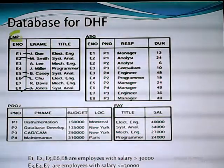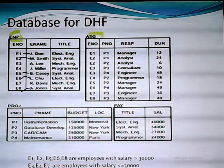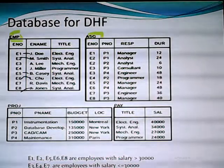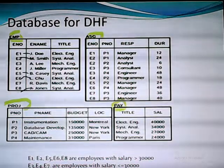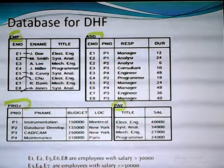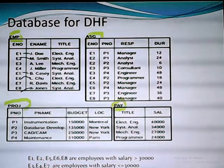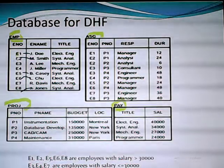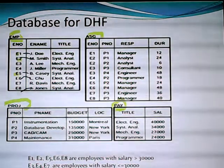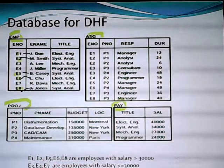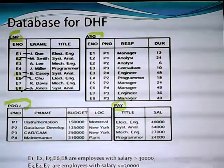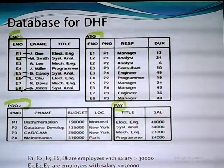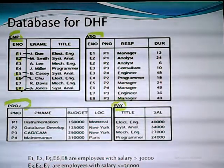It contains four relations: employee, assignment, project, and pay. I want to emphasize that in the employee relationship I have two kinds of employee. The first kind — E1, E2, E5, E6, and E8 — are employees with salary bigger than $30,000. The remaining employees, E3, E4, and E7, are employees with salary less than or equal to $30,000.